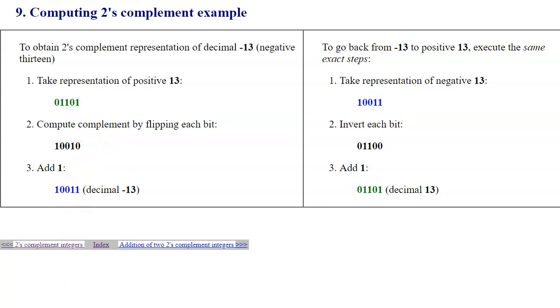And for demonstration, if we start with the negative 13, and invert every bit, and then add 1, notice that this becomes an exact equivalent of the positive 13. The same set of steps brings us back to the positive number. So, these are the properties of the two's complement encoding.